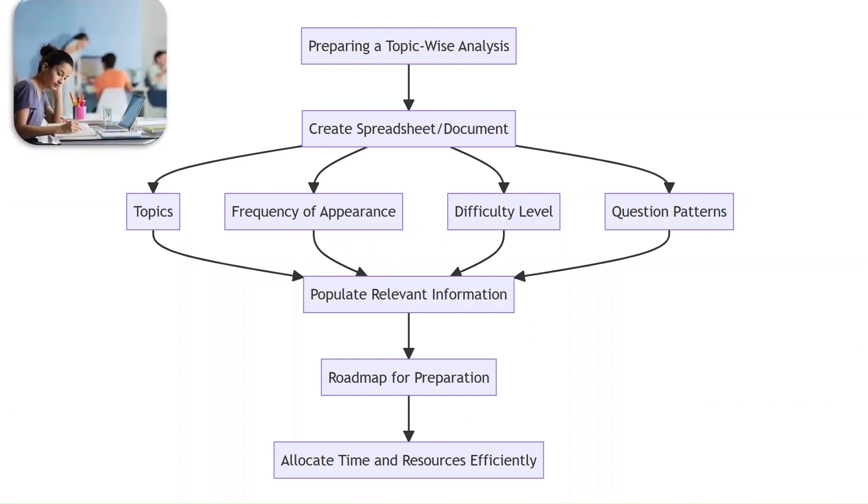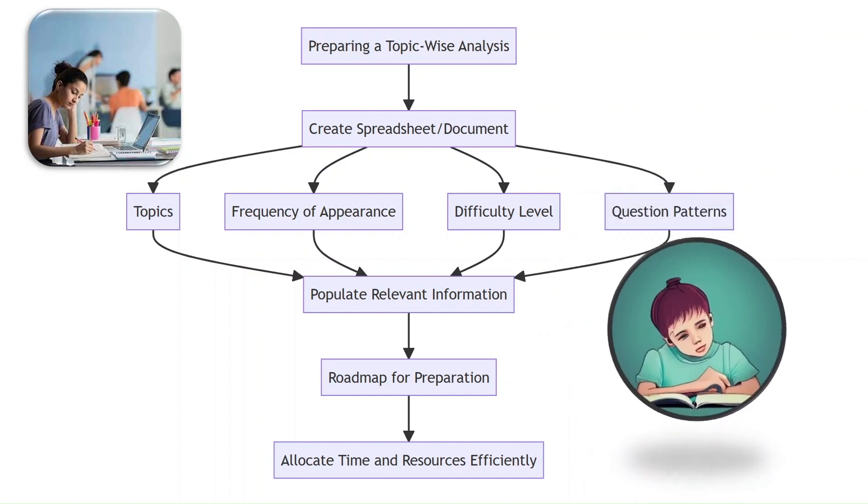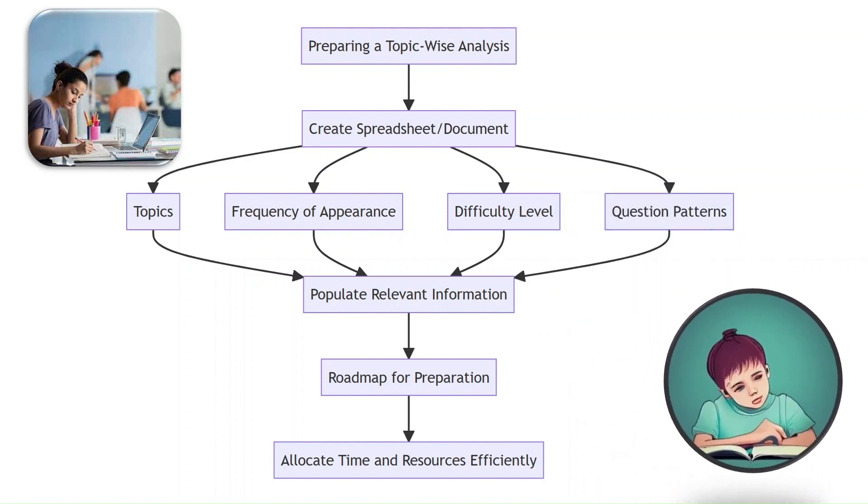Now that you've analyzed the question papers, it's time to prepare a topic-wise analysis. You need to create a spreadsheet or document where you can record the frequency, difficulty level, and question pattern of each topic. This analysis will help you prioritize your study plan and focus on areas with higher chances of being asked in the upcoming examination. Create a spreadsheet with columns for topics, frequency of appearance, difficulty level, and question pattern. Populate the rows with relevant information for each topic based on your analysis. This analysis will serve as a roadmap for your preparation, guiding you to allocate time and resources efficiently. You can do this analysis for major sections and their subsections as mentioned in the syllabus.